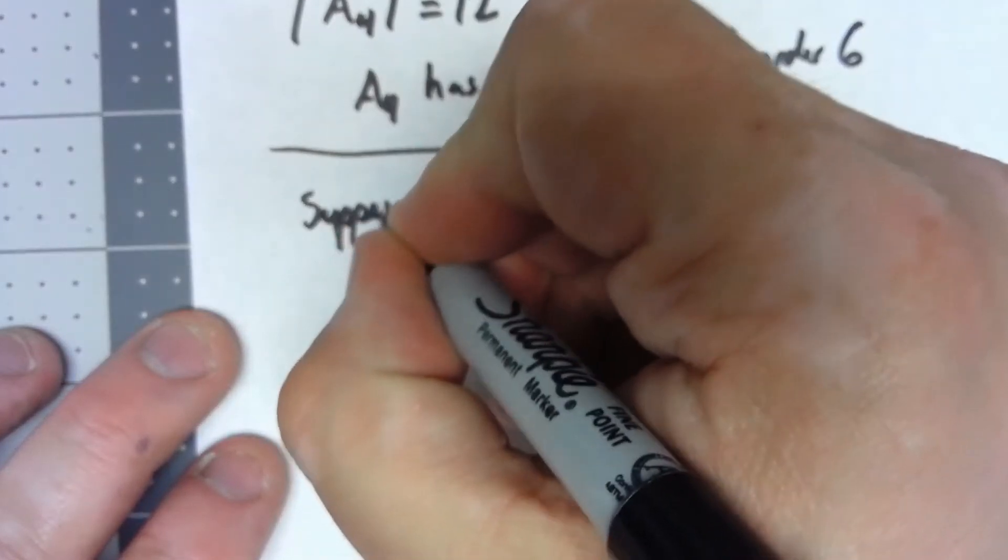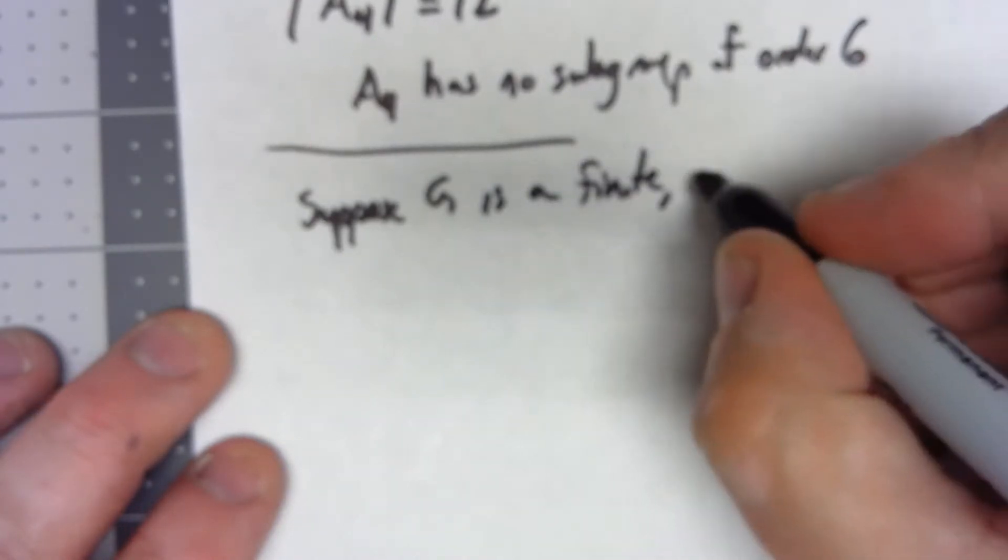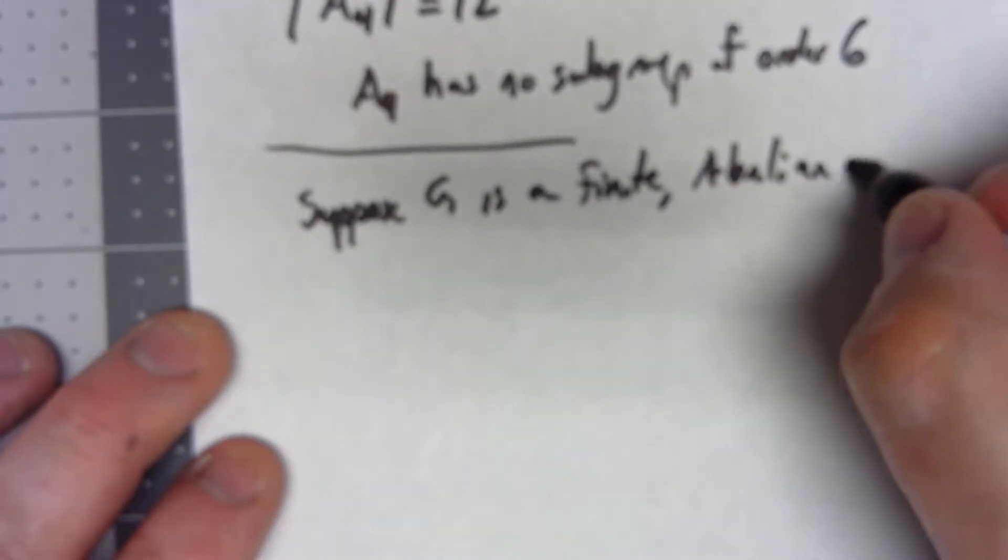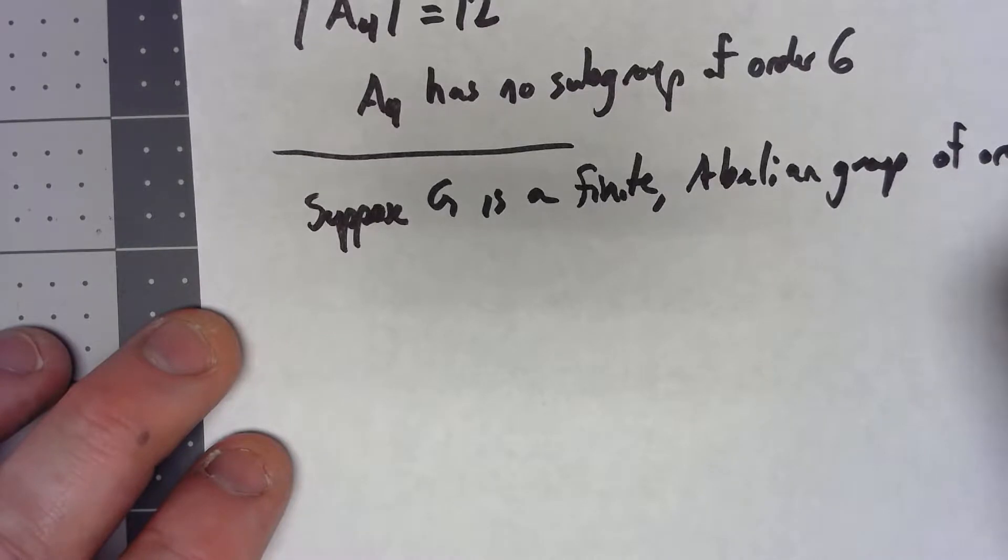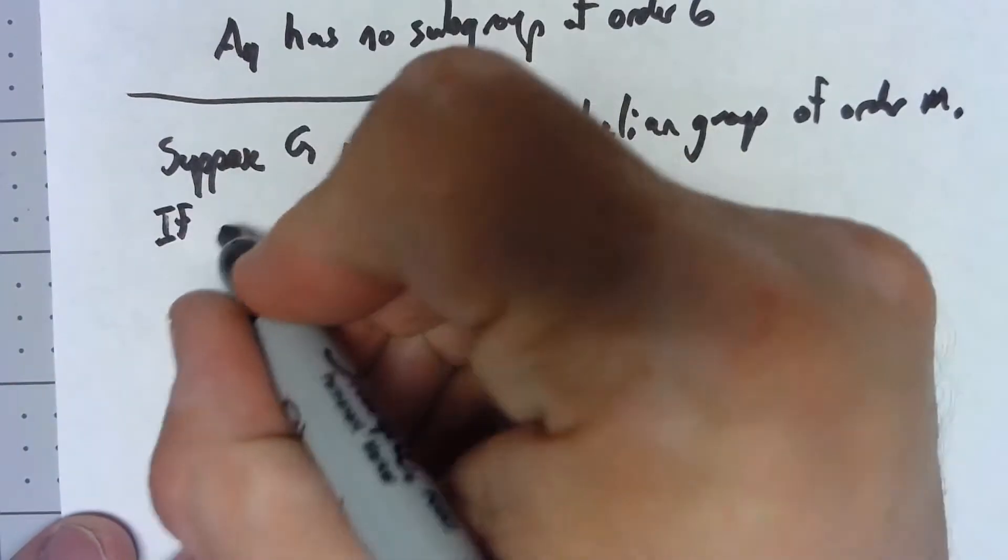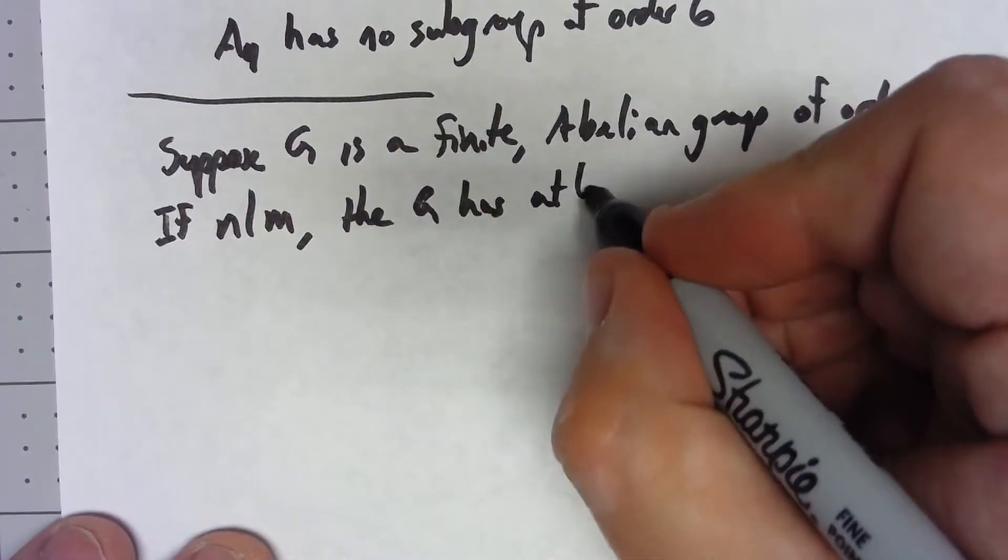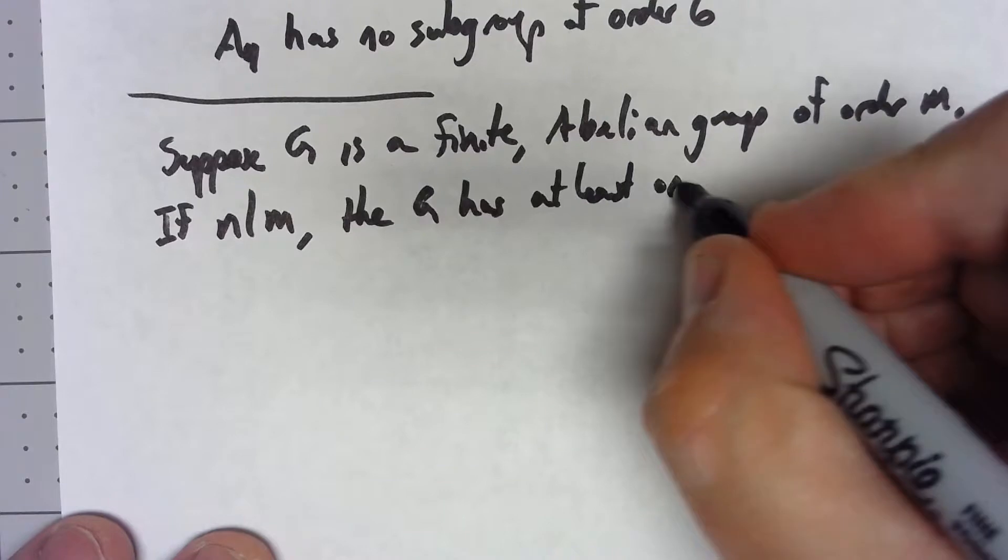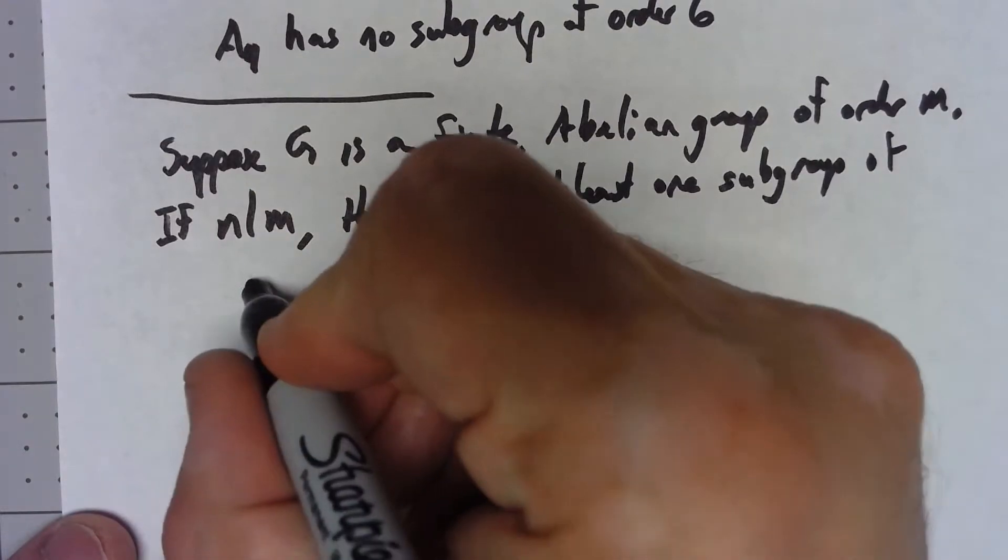Suppose that G is a finite abelian group of order M. If N divides M, then G has at least one subgroup of order N.